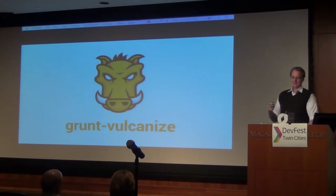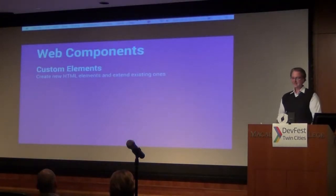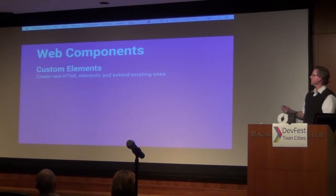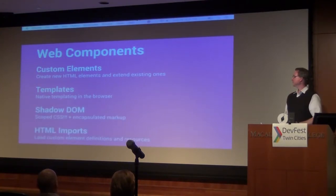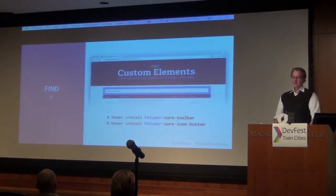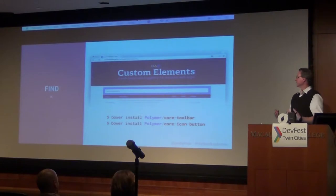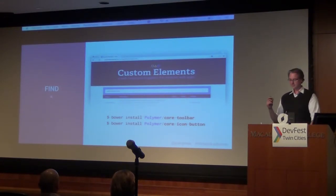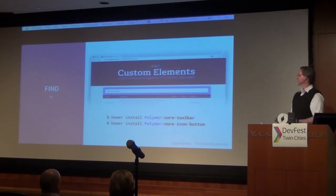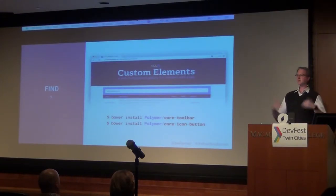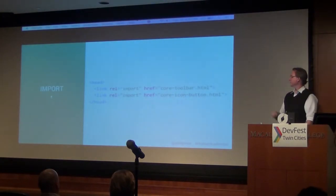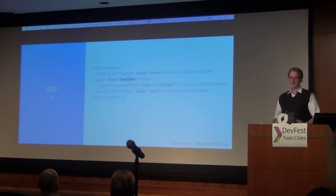You can also incorporate Vulcanize into your build process — there's a Grunt Vulcanize plugin. So web components have four key parts: custom elements, templates, the shadow DOM, and HTML imports. To use them, you can find components at sites like customelements.io. Use a package manager like Bower to download and install them, which will check for any dependencies and bring them into your application. Then you just import them in the head of your document, and the library handles the loading of any needed resources.